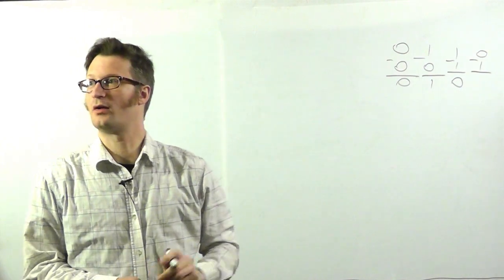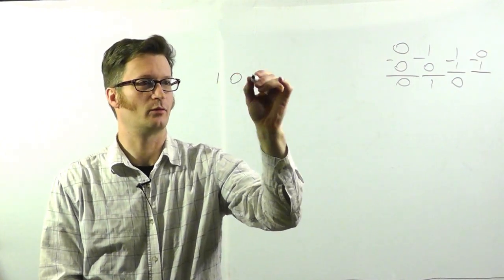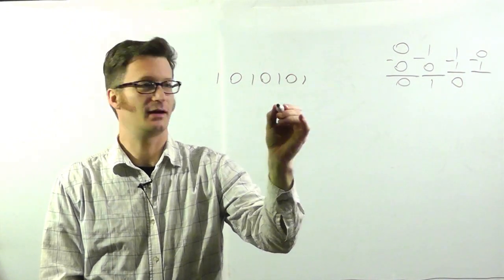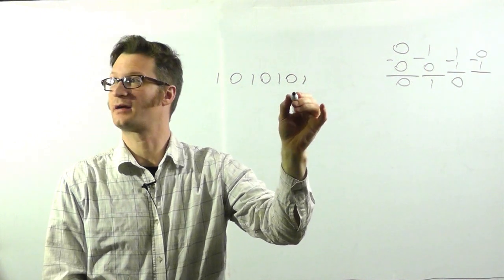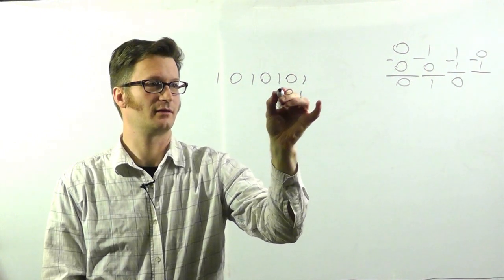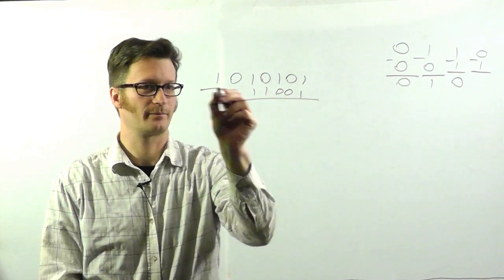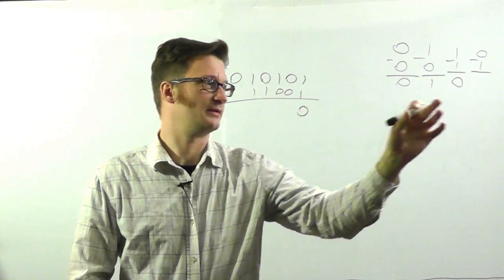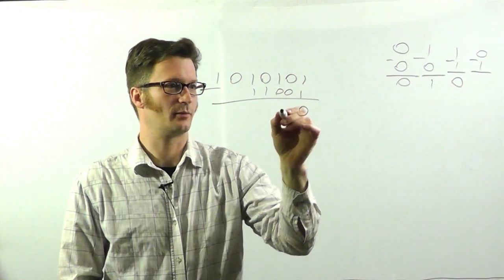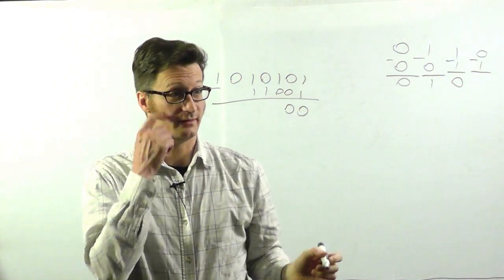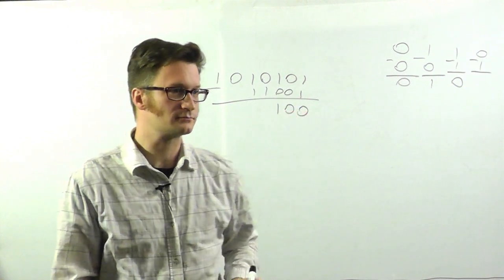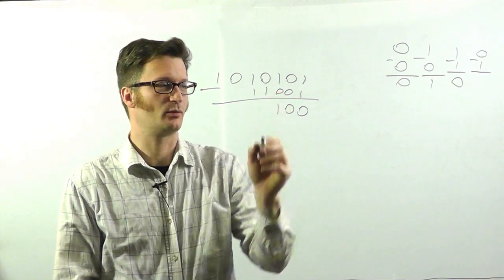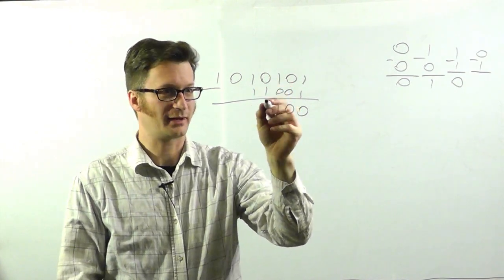So we're going to subtract 1, 0, 1, 0, 1, 0, 1. And we're going to subtract from that this number here. 1 minus 1 is 0. 0 minus 0 is 0. 1 minus 0 is 1. And now we have this case that I was talking about. So 0 minus 1. Well, we can't do that.